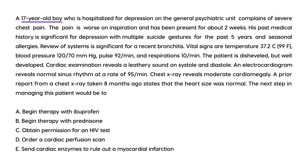Clinical vignette two: A 17-year-old boy hospitalized for depression complains of severe chest pain that is worse on inspiration and has been present for about two weeks. Past medical history includes depression and seasonal allergies. Review of systems is significant for recent bronchitis. Vital signs: temperature 99, blood pressure 120, pulse 92, respirations 10. Cardiac exam reveals a leathery sound on systole and diastole. EKG reveals normal sinus rhythm at a rate of 95, and chest x-ray reveals moderate cardiomegaly — whereas a prior x-ray eight months ago showed normal heart size. The next step in management is?